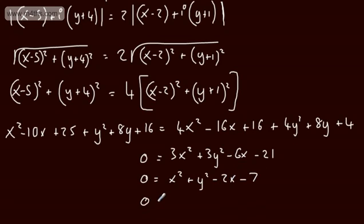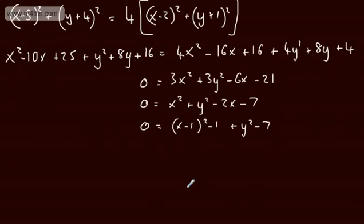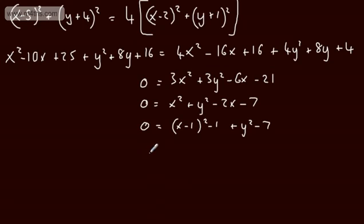Completing the square, x minus 1 all squared minus 1 plus y squared minus 7 is equal to 0. And then just rearranging in the form x minus a all squared plus y minus b all squared is equal to r squared, we end up with x minus 1 all squared plus y squared is going to be equal to 8.